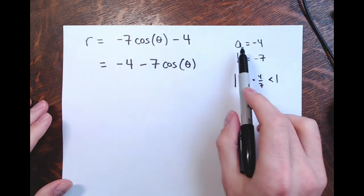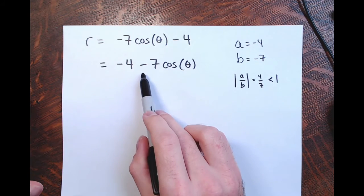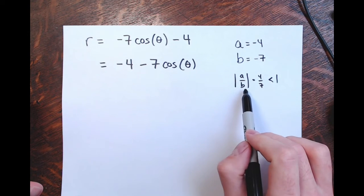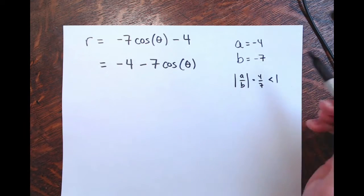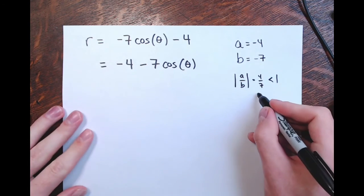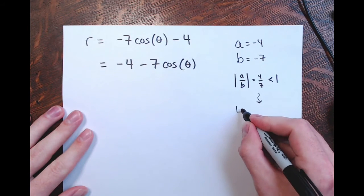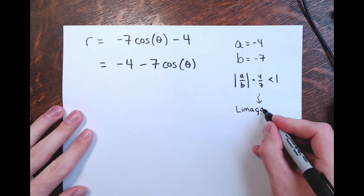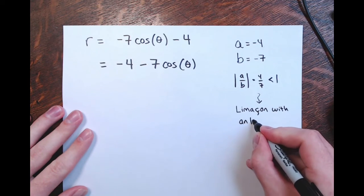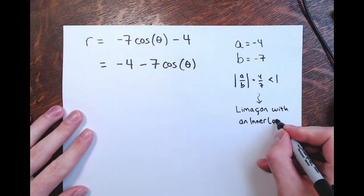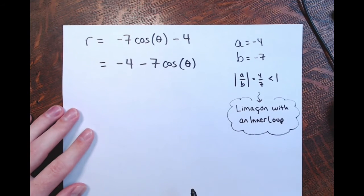Now let's see this happening. I'm going to try to graph it by hand. Graphing polar equations by hand can be a bit tricky, especially if you don't have polar graph paper. I'm going to make my own, draw my own polar grid.